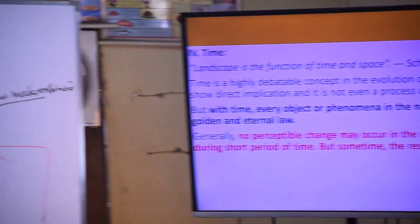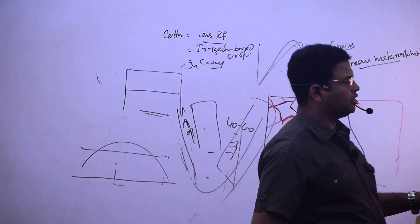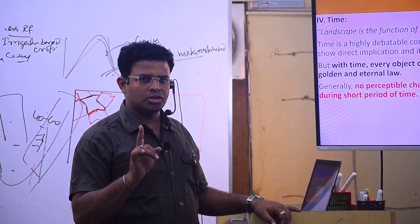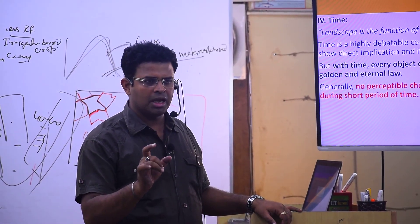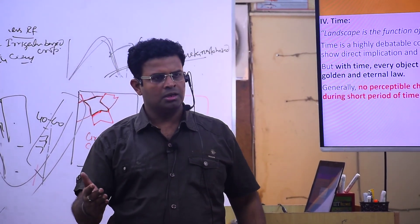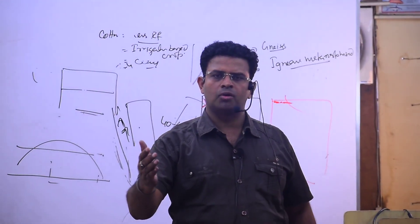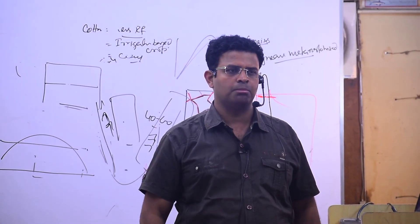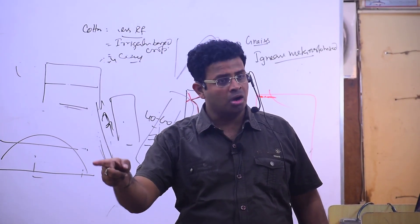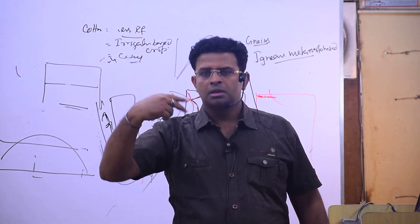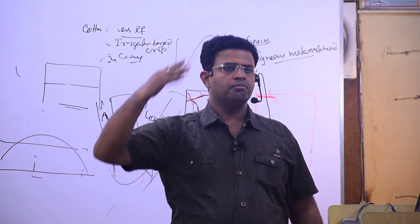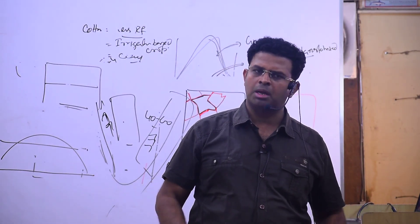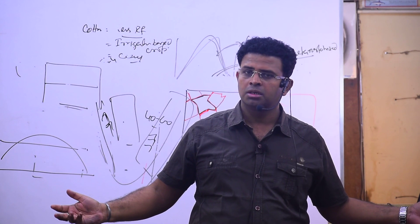We know that any morphological structure cannot form in a day - neither endogenetic processes nor exogenetic forces will produce morphological changes in a small interval of time. Both will take a long time. Himalayan formation takes long time, oxbow lake formation takes long time, V-shaped valley and U-shaped valley formation all take long time.